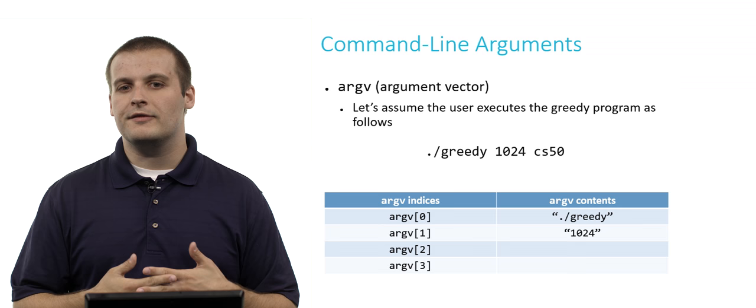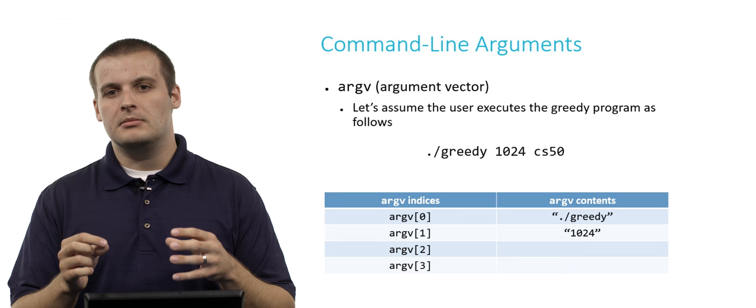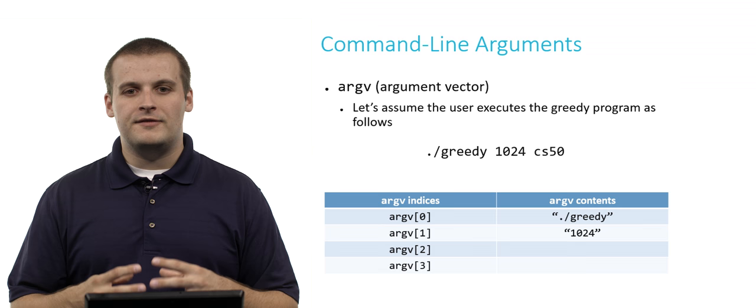It is not the integer 1024. And so you can't directly work with it by saying int x equals argv 1 minus 24. Intuitively, you might think of that as, OK, well, it's 1,024 minus 24, so x is equal to 1,000.